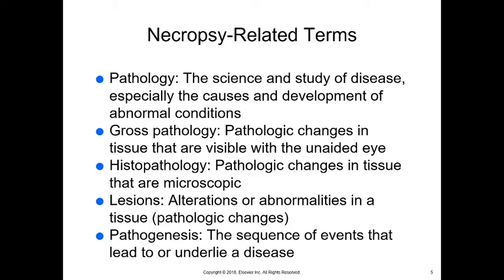Some necropsy-related terms you need to know: Pathology is the science and study of disease and abnormal conditions. Gross pathology refers to pathologic changes in tissue that are visible with the unaided eye. Histopathology refers to pathologic changes in tissue that are microscopic, giving us the tissue architecture. Lesions are alterations or abnormalities in tissue — any pathologic changes. Pathogenesis is the sequence of events that lead to or underlie a disease.